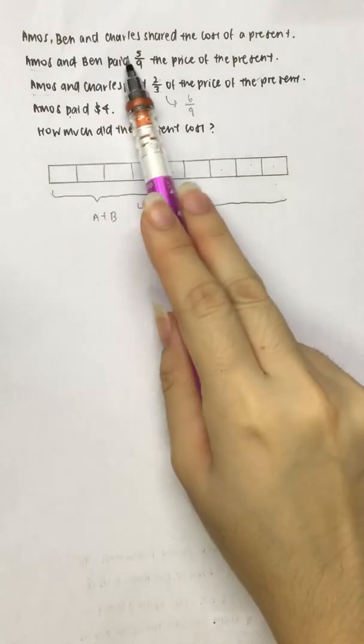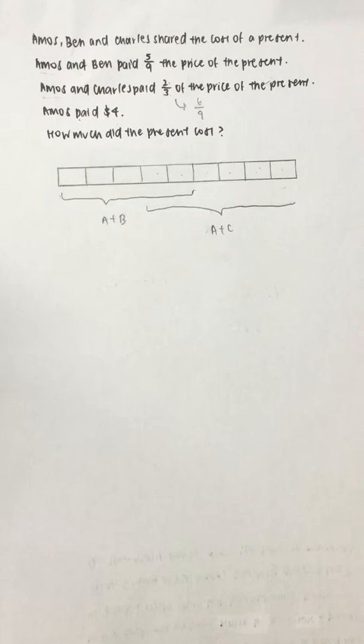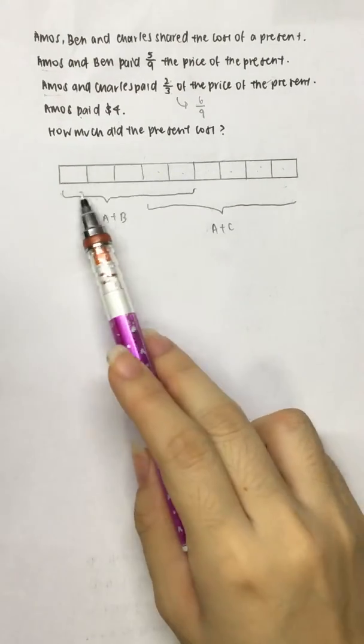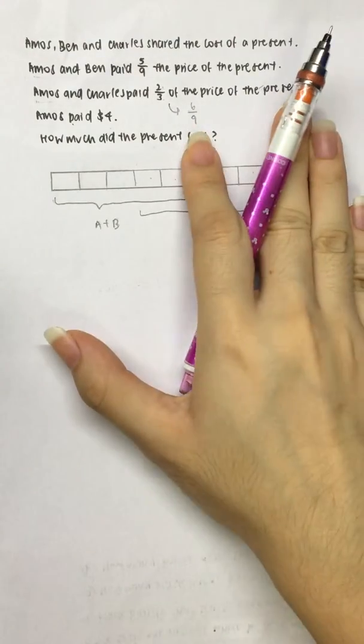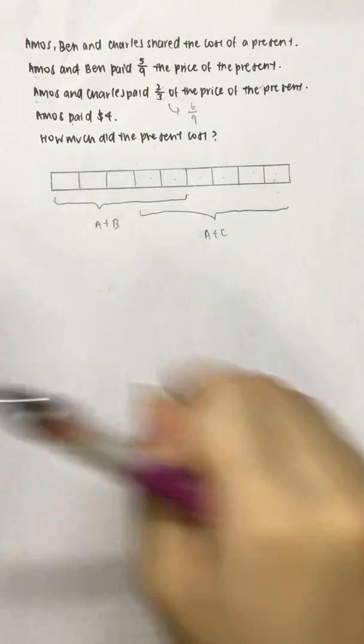Since Amos, Ben and Charles shared the cost of the present, all 9 units must be covered. Amos and Ben, 5 units. Amos and Charles, 6 units.